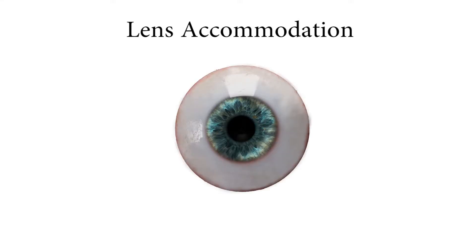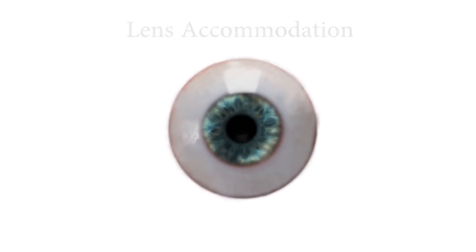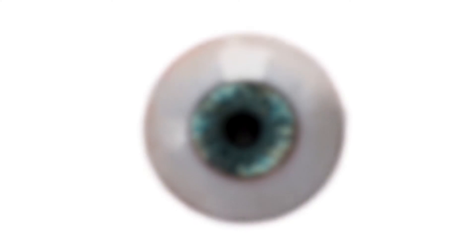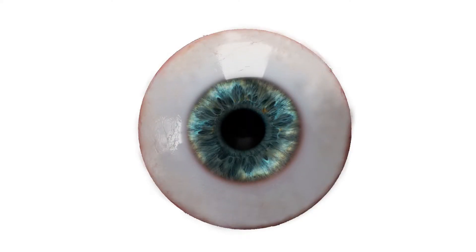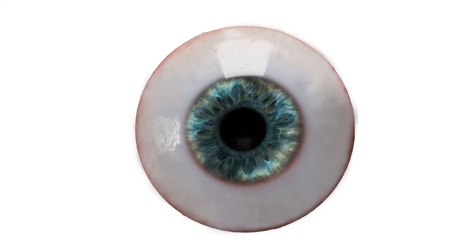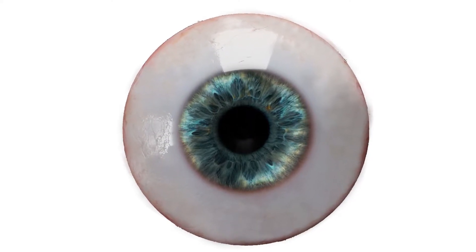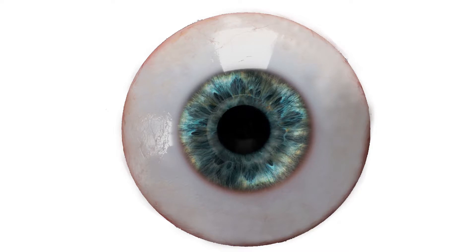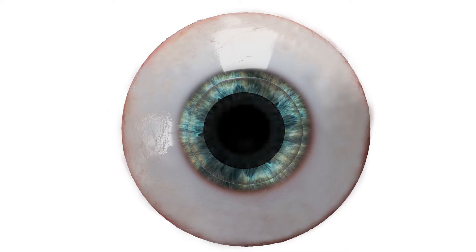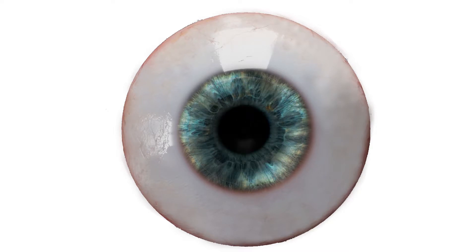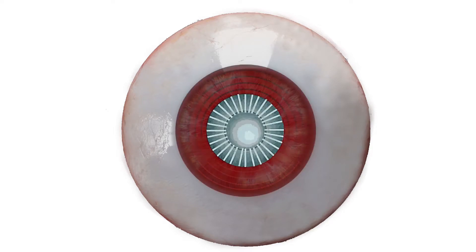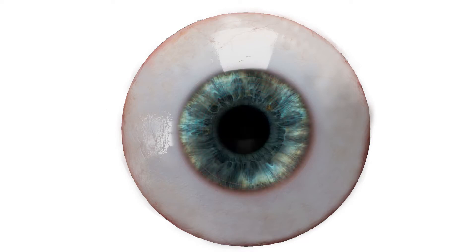Lens accommodation is when the optical power of the eye's curvature changes in order to focus on objects at a range of distances. The lens is flexible and has a curvature controlled by ciliary muscles through zonules.